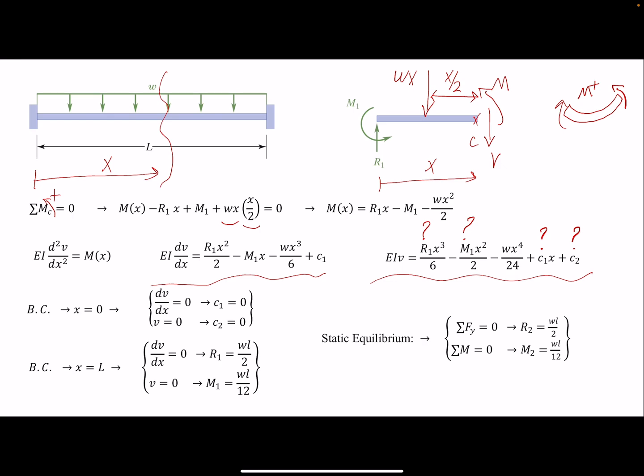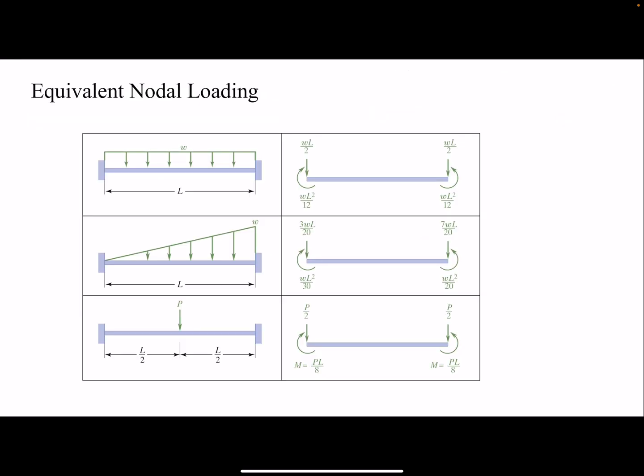Now that we have R1 and M1, we can find R2 and M2 by static equilibrium. So we can find all the loadings, and here the equivalent loading on each node is shown for you. We did it for a simple distributed loading, rectangular loading, but you could do the same thing for triangular loading or for a point load.